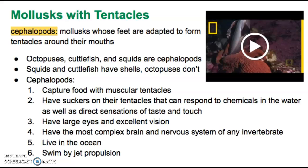Cephalopods also have large eyes and excellent vision. So far we've encountered organisms that can barely see or only sense light, but here we have invertebrates — still relatively simple — with large eyes and excellent vision. This is because cephalopods have the most complex brain and nervous system of any invertebrate on planet Earth, allowing them to respond and problem solve in remarkable ways. There's also a video linked on my website about how octopi can take on and eat sharks, along with other videos about cephalopods and their amazing abilities.